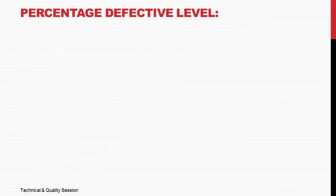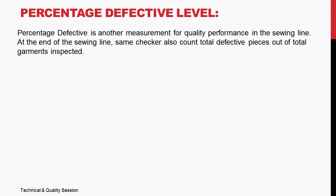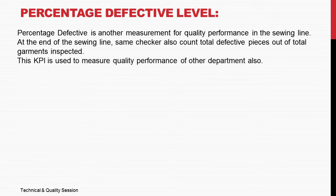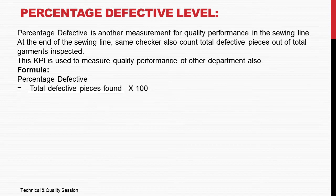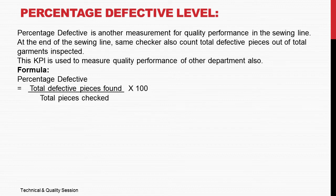Percentage defective is another measurement for quality performance in the sewing line. At the end of the sewing line, checkers count total defective pieces out of total garments inspected. This KPI is also used to measure quality performance of other departments. The formula is: percentage defective equals total defective pieces found multiplied by 100, divided by total pieces checked.